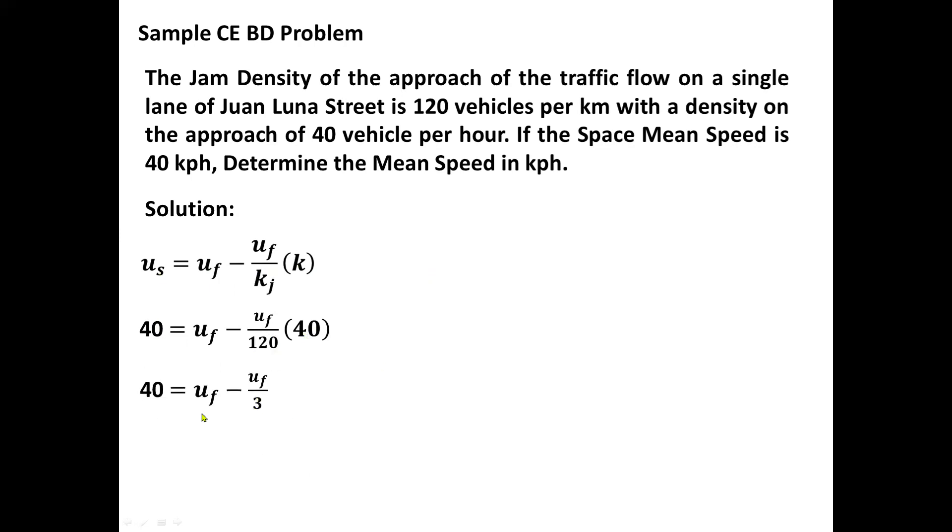Simplifying the equation, we can have 40 equals U sub f minus U sub f all over 3. Since 40 over 120 is also one third, then the equation becomes 120 equals 3 U sub f minus U sub f. So we have it as 120 equal to 2 U sub f. So dividing the equation by 2, we obtain a value of U sub f equals 60 kilometers per hour. And this is what we're looking for, the mean speed of our given problem.